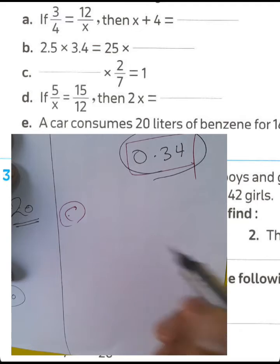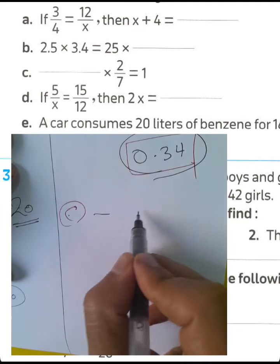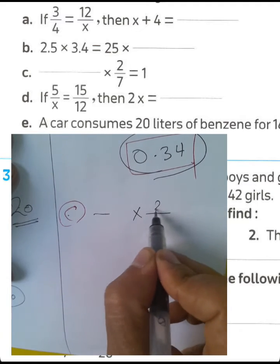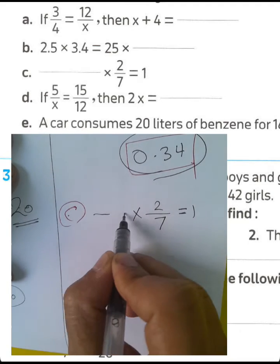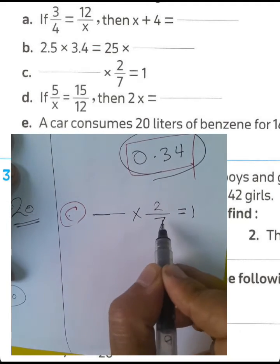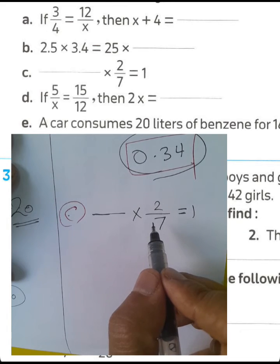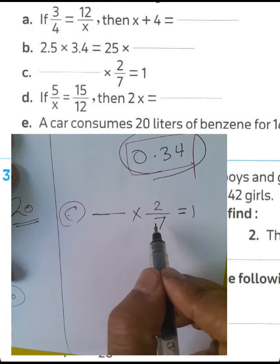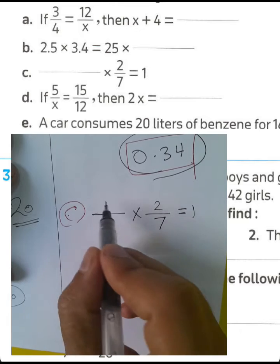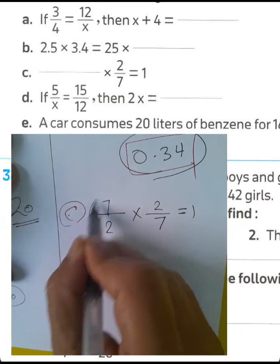Letter C: blank times 2 over 7 equals 1. We find the reciprocal of 2 over 7, which is 7 over 2.